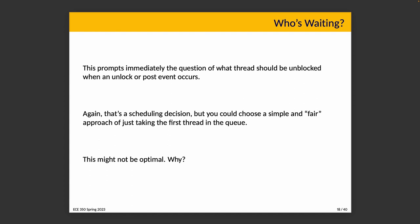When we unblock a thread, which one do we choose? That's a scheduling decision. A very simple approach is first-come-first-served: take the first thread in the queue — the one that has been waiting the longest — and unblock it. The slide says that may not be optimal. One reason is it ignores thread priorities. First-come-first-served ignoring priorities is fair in some sense but maybe not ideal in the grand scheme of things.